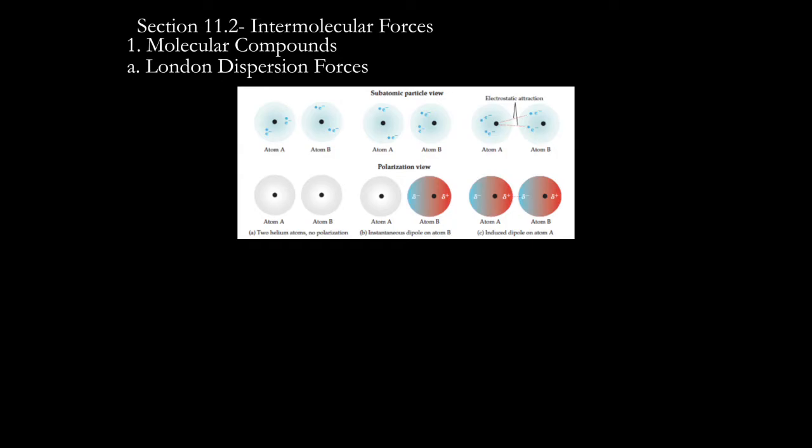Now let's look at how the strengths of bonds differ within one type of intermolecular force. We'll first talk about intermolecular forces for molecular compounds, then ionic and metallic. For molecular compounds, London dispersion forces tend to be the weakest attraction. You can see the partial positive and partial negative charge attracting two atoms to one another, but it only lasts for a moment — that's why it's called an induced or temporary dipole.